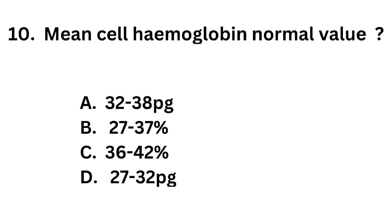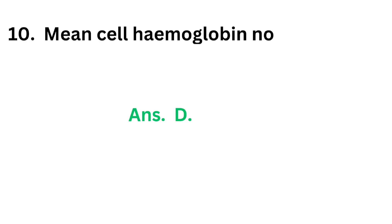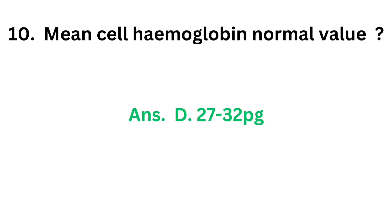Question number 10. Mean cell hemoglobin normal value: Option A: 30 to 38 picograms. Option B: 27 to 37%. Option C: 36 to 42%. Option D: 27 to 32 picograms. The correct answer is option D, 27 to 32 picograms.